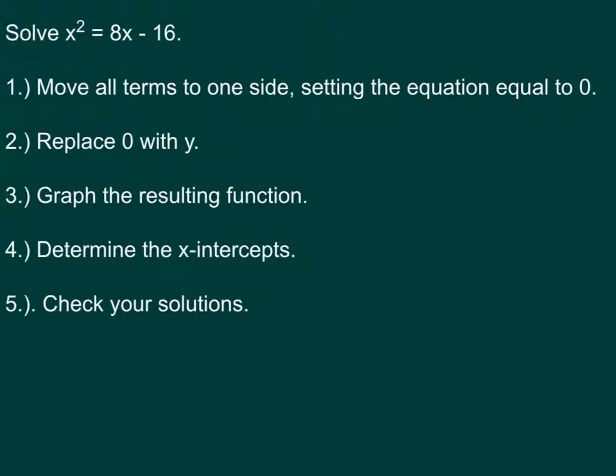Which is going to give me 0 equals, I'm going to still put it in standard form. So negative x squared plus 8x minus 16. And replace the 0 with y. So I'm looking to graph y equals negative x squared plus 8x minus 16. I'm going to graph that function. Now, I know that it should open down because I have a negative x squared. But I just do the same process that I did before in order to graph that. So let's skip that and see what the graph would look like.